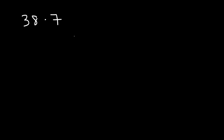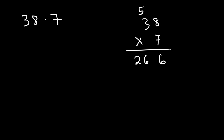Sometimes you may need to multiply two numbers where one or both are large. For example, what's 38 multiplied by 7? You can use a calculator or multiply the old-fashioned way. 8 times 7 is 56 — write the 6 and carry the 5. 3 times 7 is 21, plus the carried 5 is 26. So 38 times 7 is 266. You can verify that with a calculator.